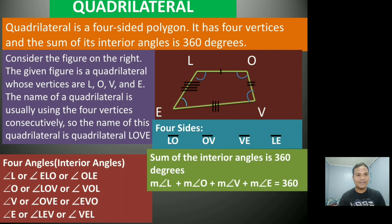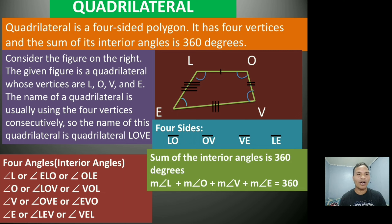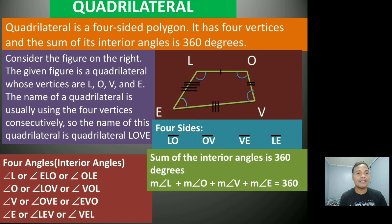Let us define first what is a quadrilateral. A quadrilateral is a four-sided polygon. It has four vertices and the sum of its interior angles is 360 degrees.